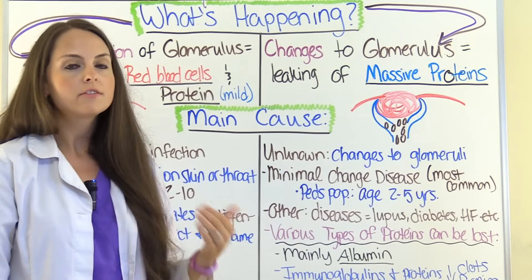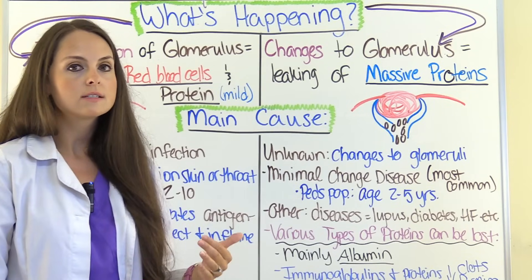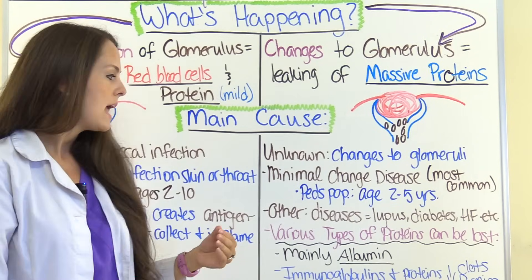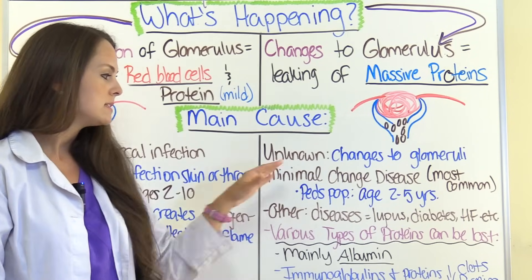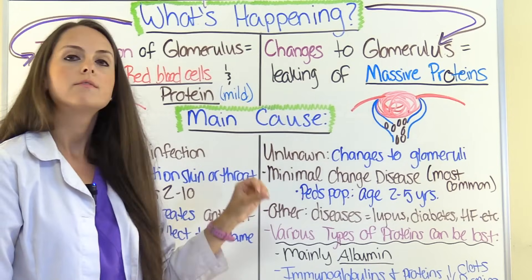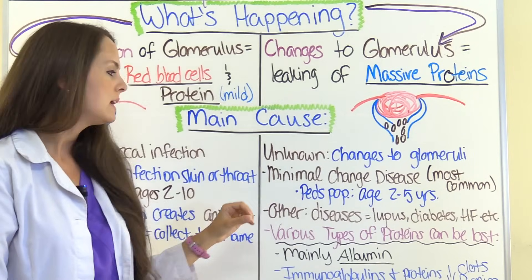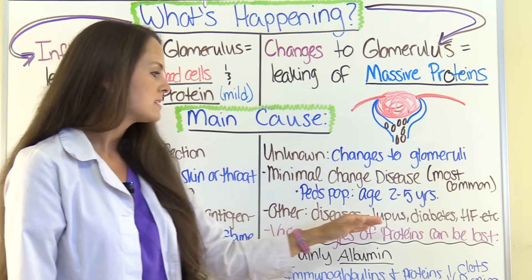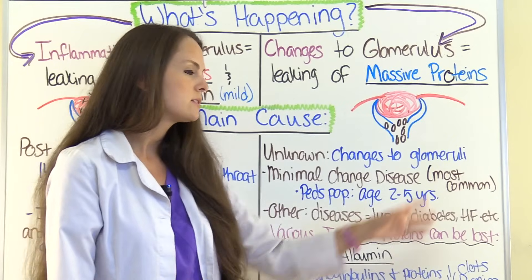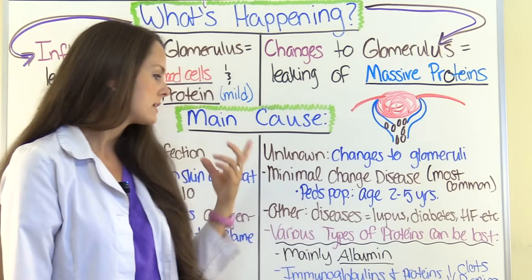Other things can cause nephrotic syndrome as well — secondary causes where diseases affect the function of the kidney. This can include lupus, diabetes, heart failure, and others.